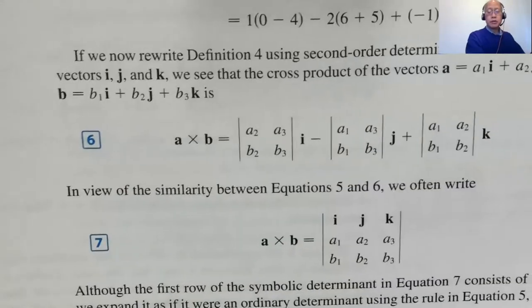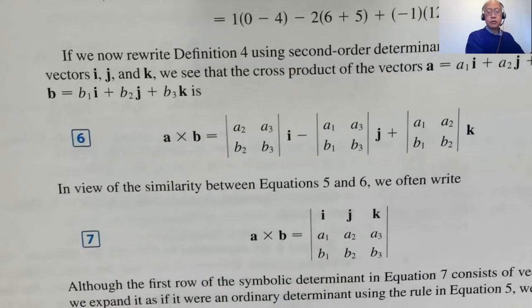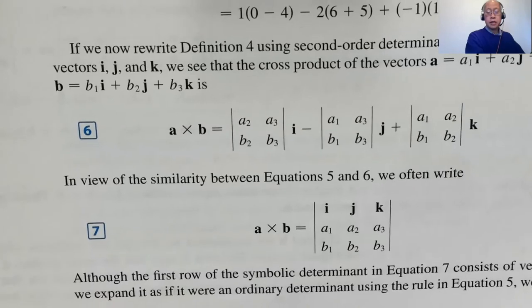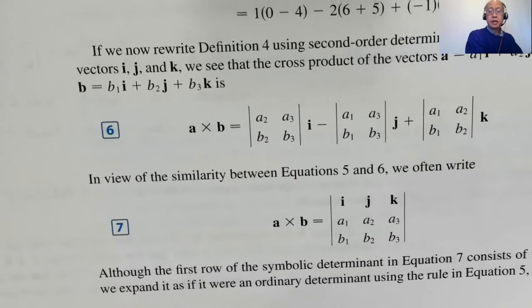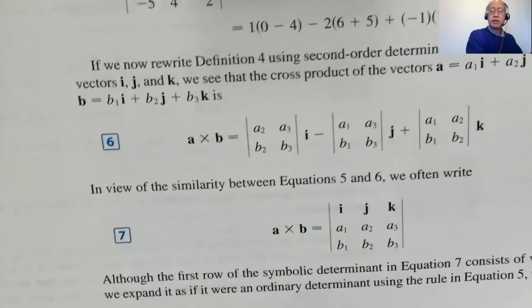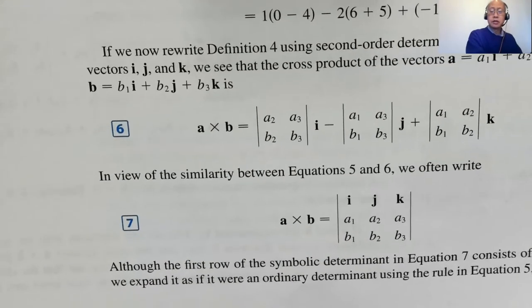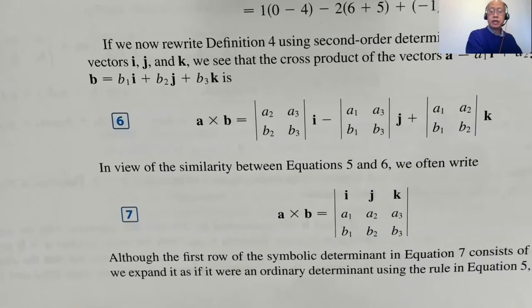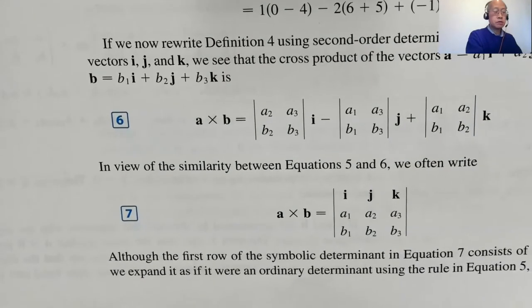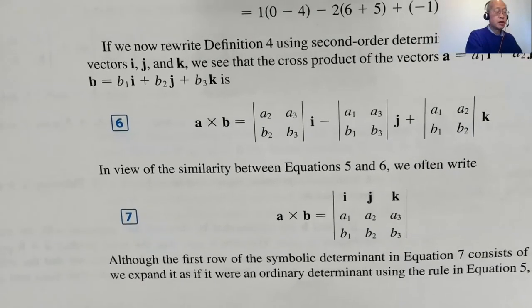If you want to put number seven on your formula sheet, you may. A cross B is a three-by-three determinant with i, j, k in the top row, then a1, a2, a3, then b1, b2, b3. So we have to review a little bit about determinants.